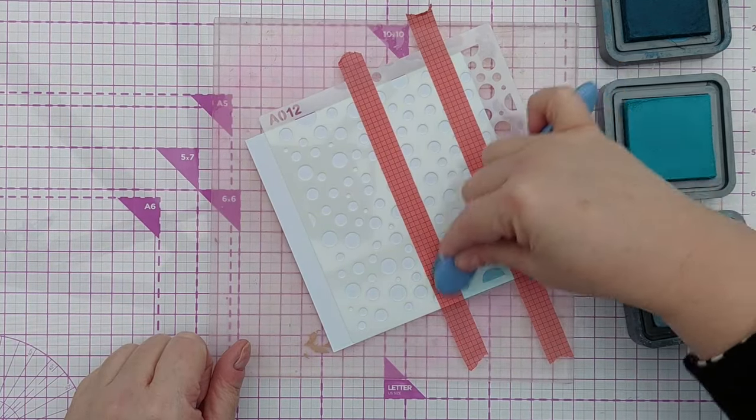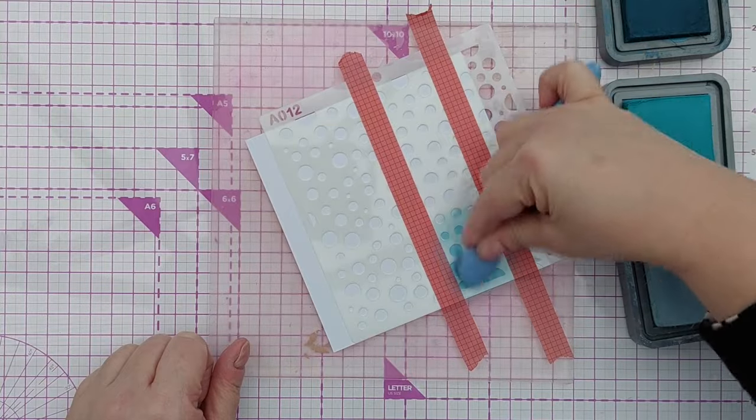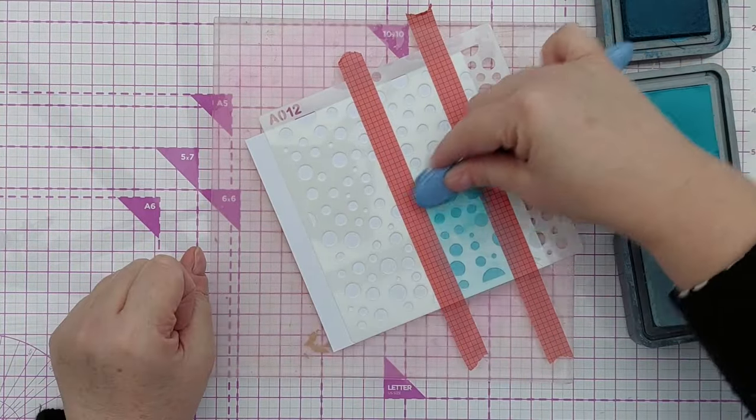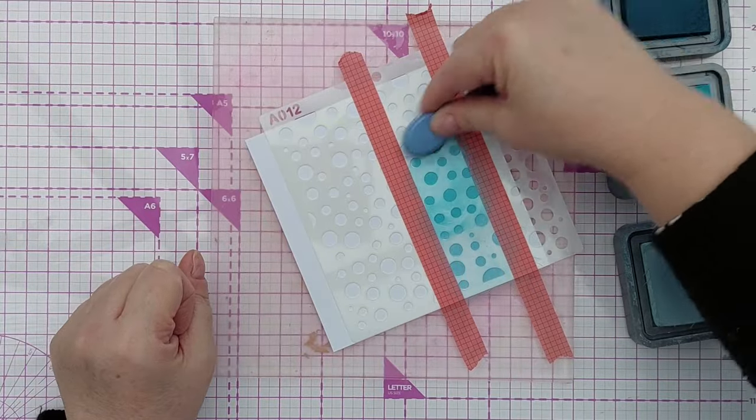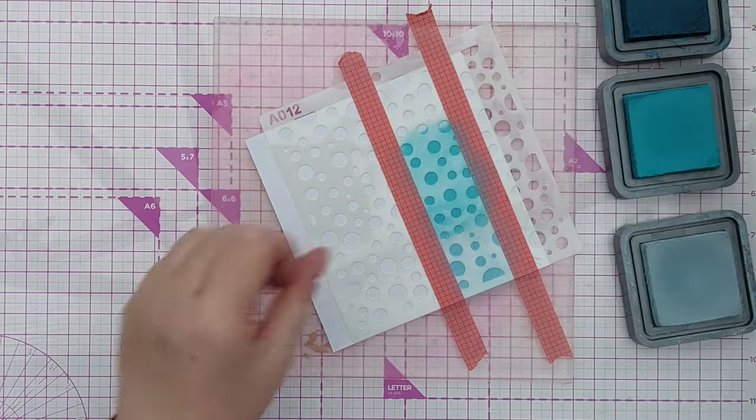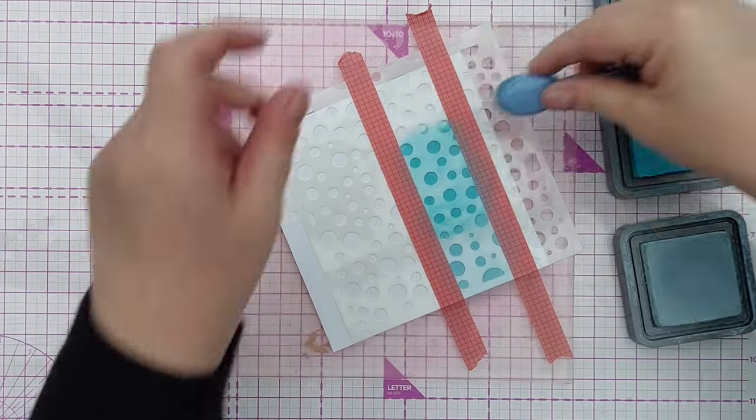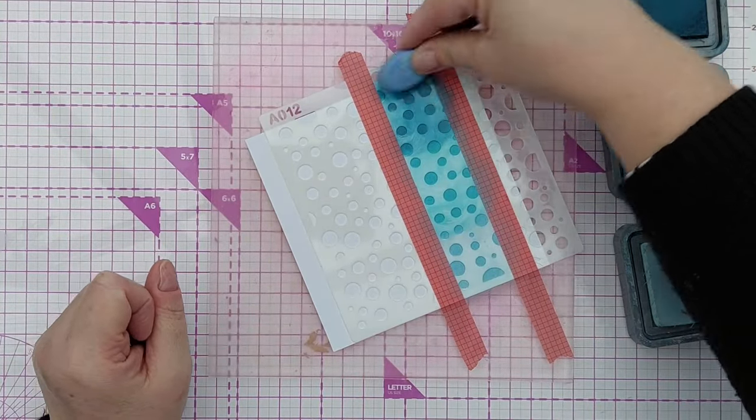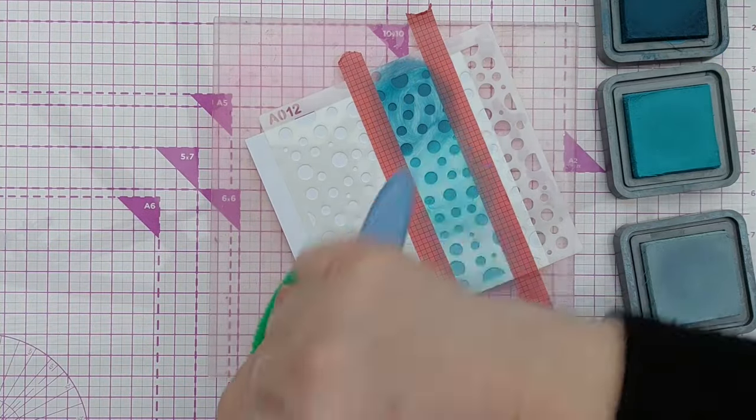Then there's Broken China and then Uncharted Mariner. I started with the lightest color so I can use the same blending brush and not contaminate light color ink pads with darker color inks.